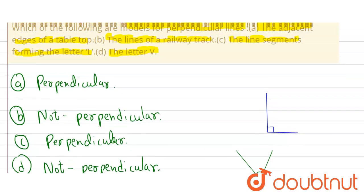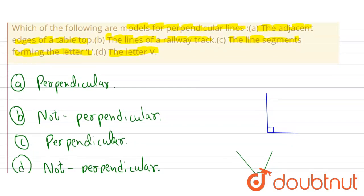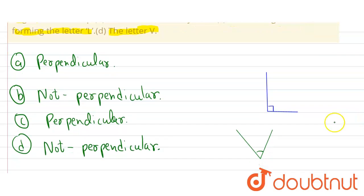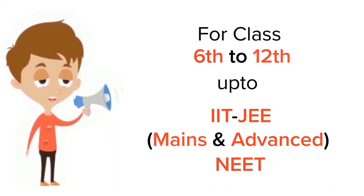Therefore, the models for perpendicular lines are Part A and Part C. Thank you. For class 6–12, IIT JEE and NEET level, trusted by more than five crore students — download the DoubtNut app today.